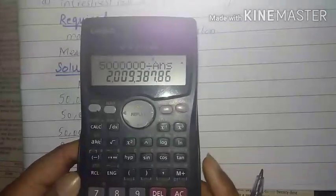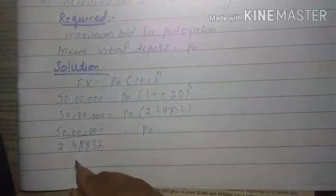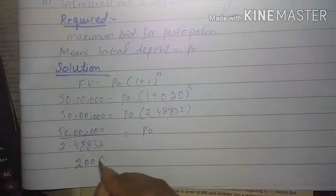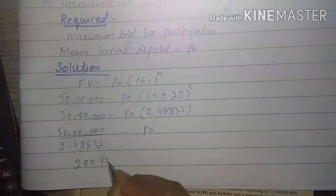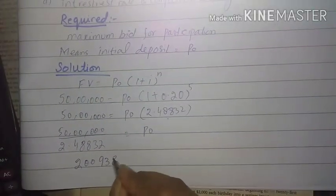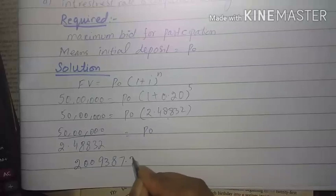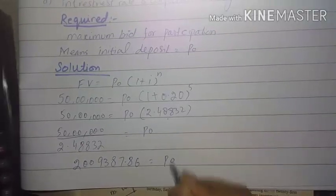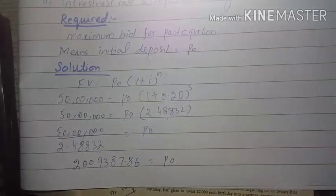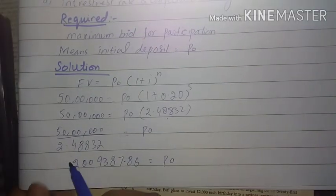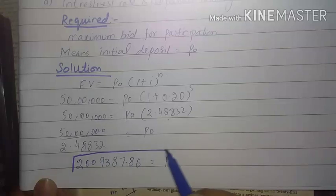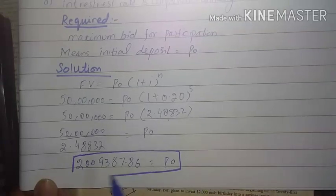We add the cash flow to the initial deposit calculation. The result is P0 equals approximately 2,009,387.86. So when the interest rate is annually compounded, the initial deposit — that is, the maximum bid — will be 2,009,387.86.